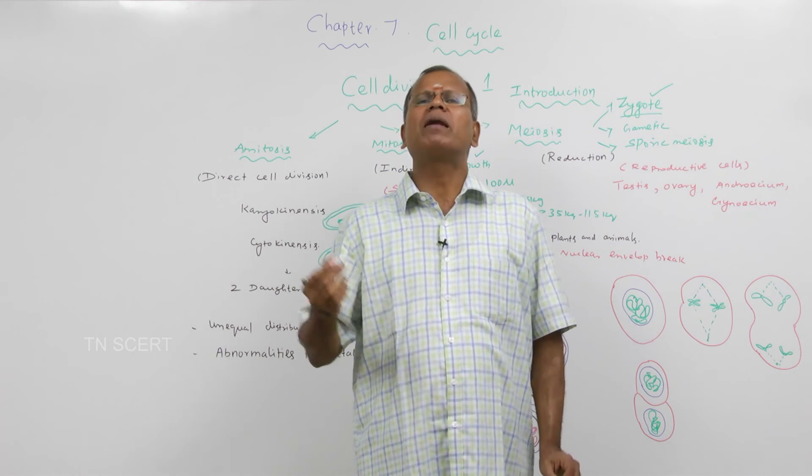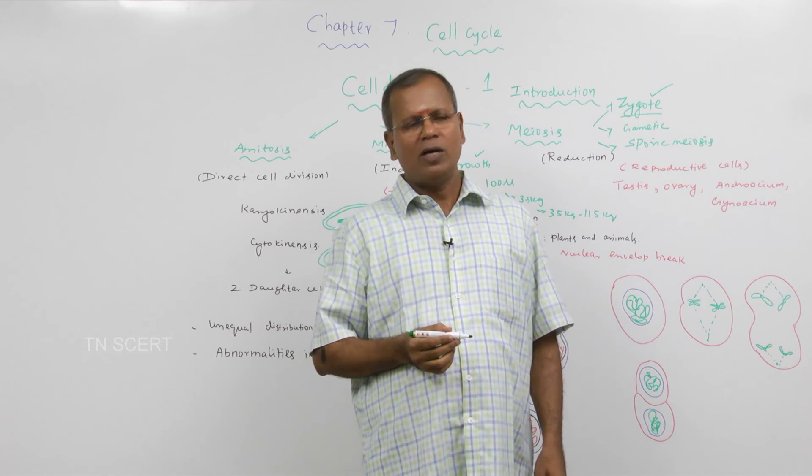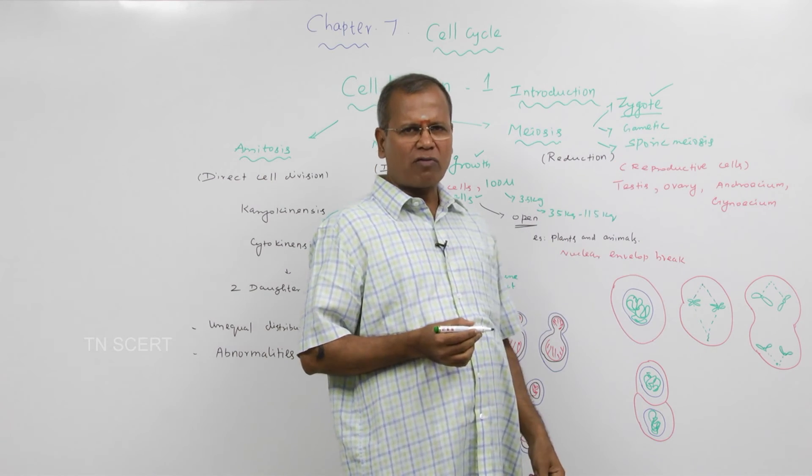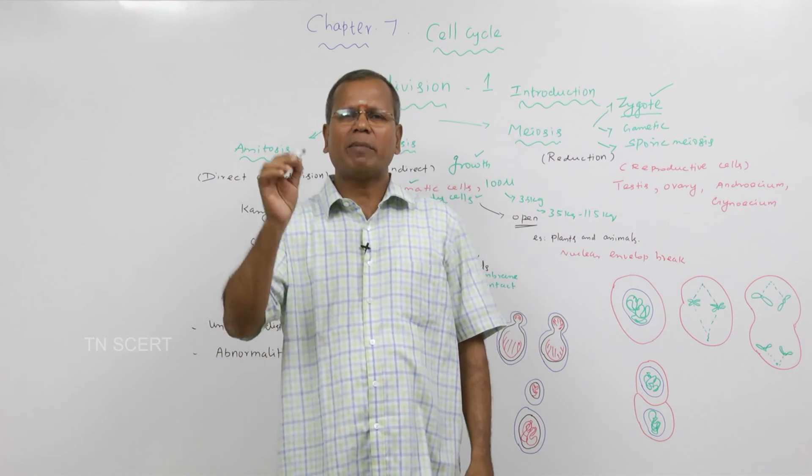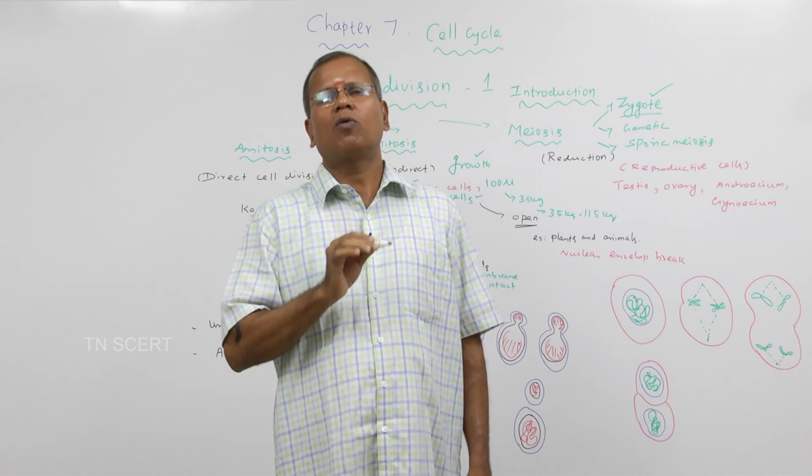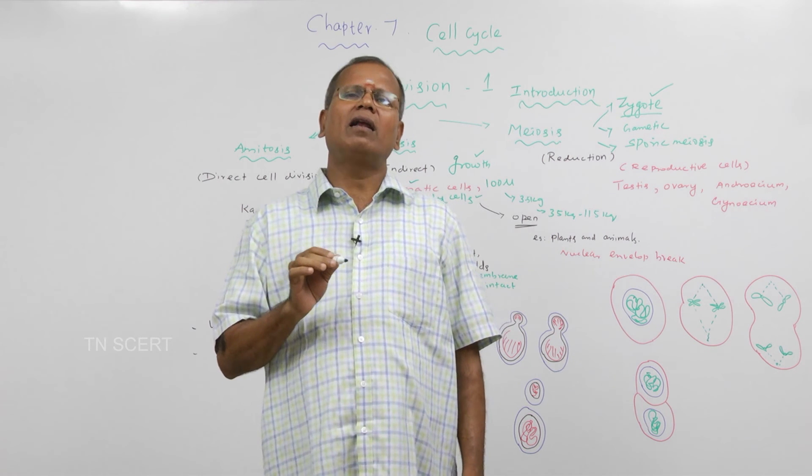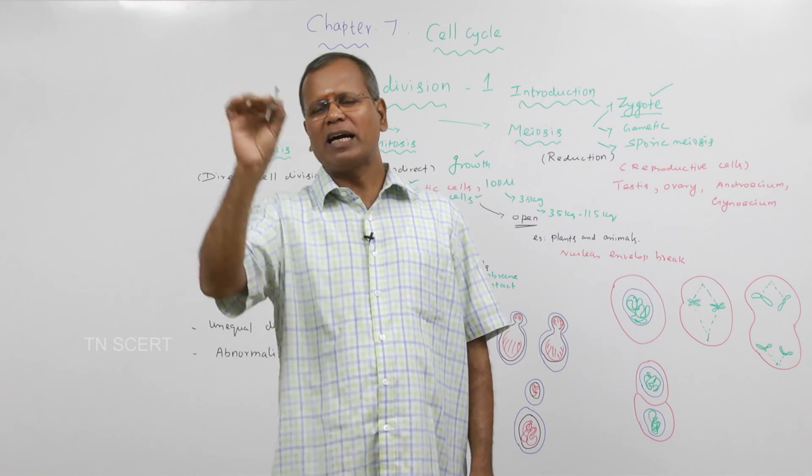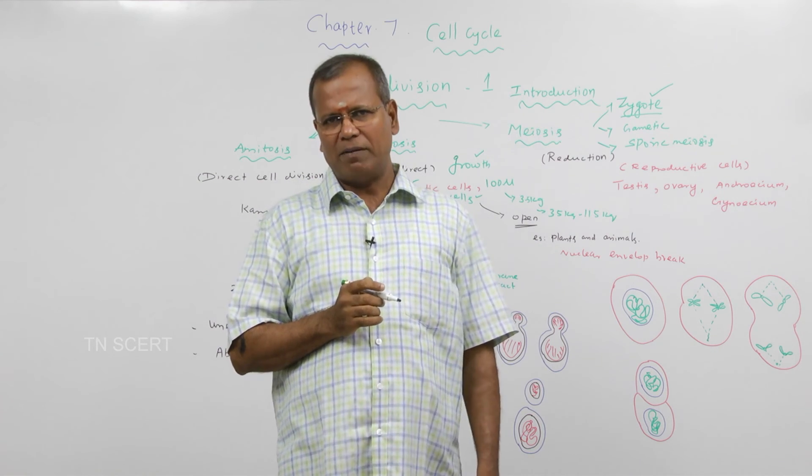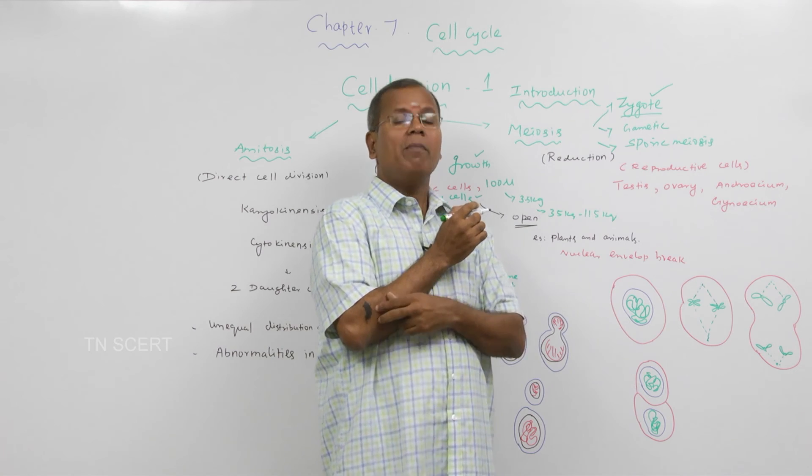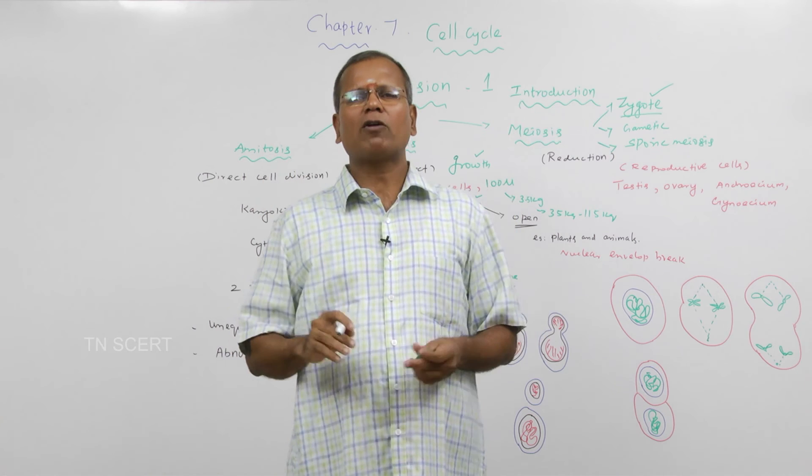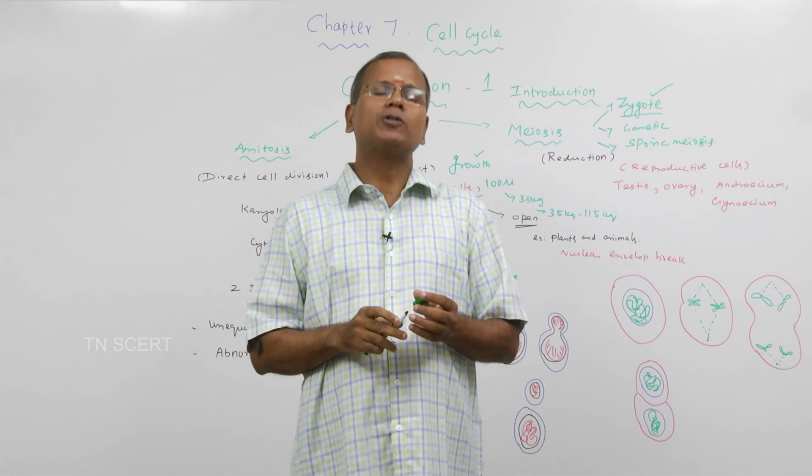At the time of gamete formation, we are calling it as gametic meiosis. This is the best example. Next is the sporic meiosis. Meiosis takes place at the time of spore formation. This is the sporic meiosis.